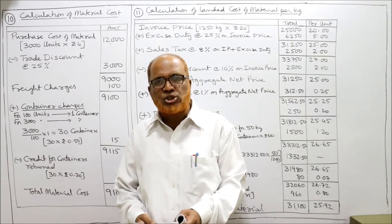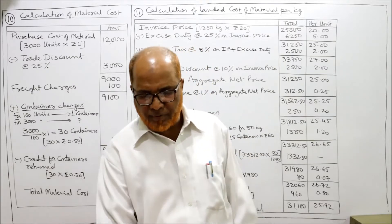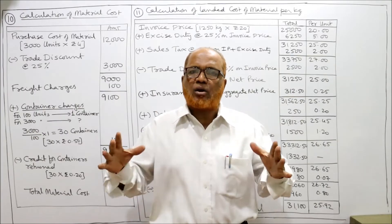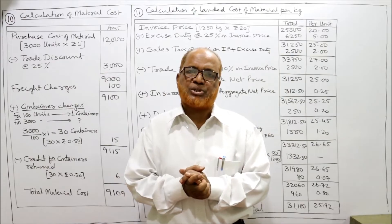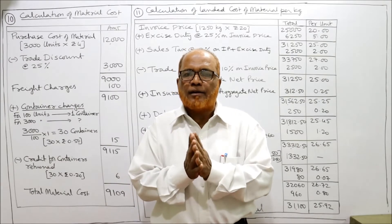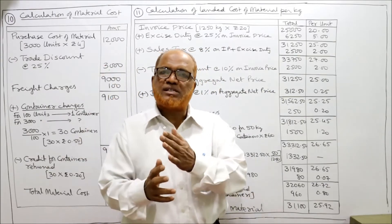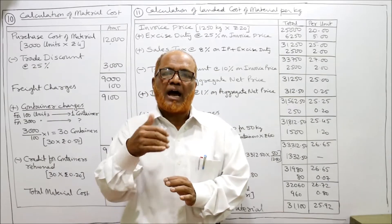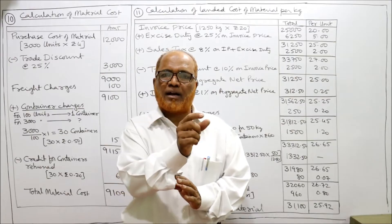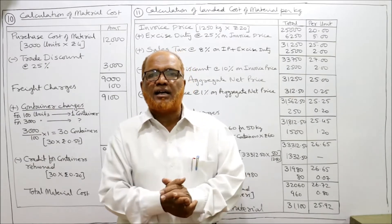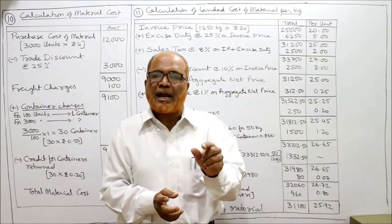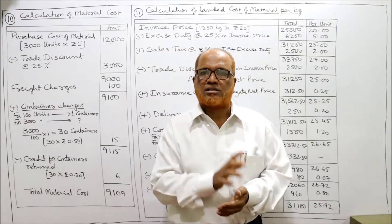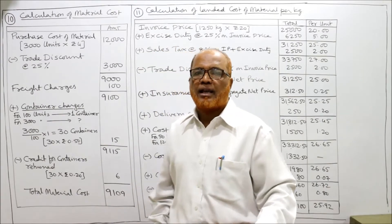Now calculate the material cost for 3000 units, assuming the purchaser decides to purchase this lot. Our requirement is 3000 units, so we find the material cost for 3000 units purchased from the supplier. First we take the purchase cost, subtract the trade discount, add the freight charges, add the container charges at 50 paisa per container, and subtract the credit for containers returned.